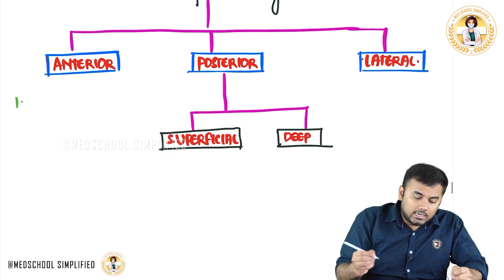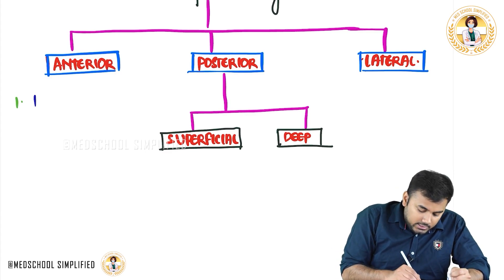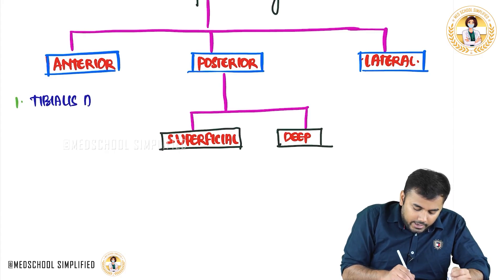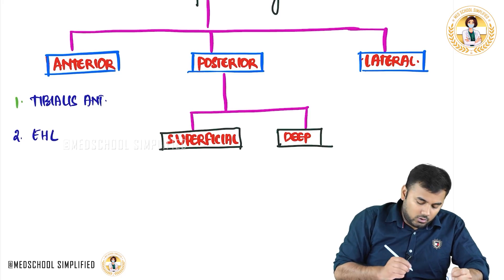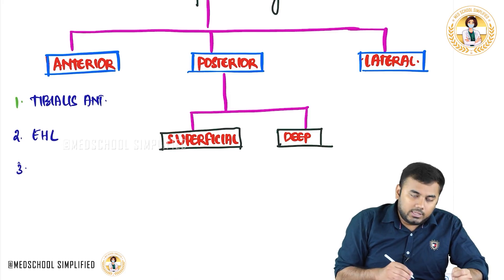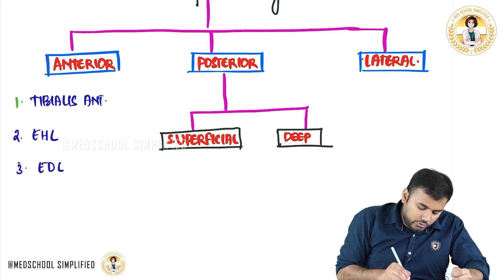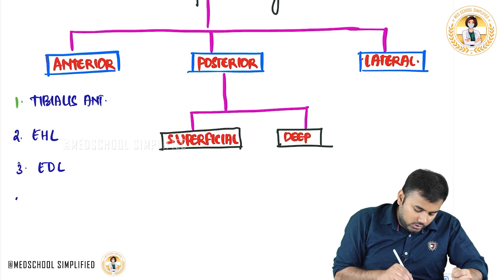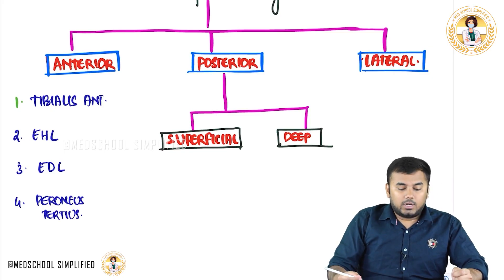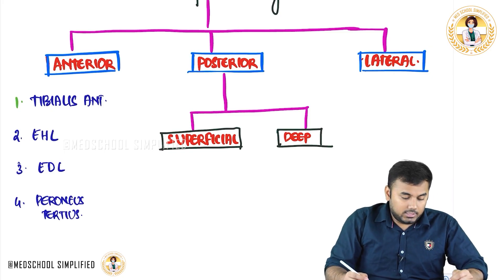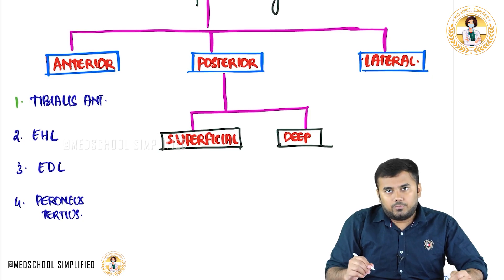So the anterior compartment muscles are: tibialis anterior, extensor hallucis longus, extensor digitorum longus, and peroneus tertius.